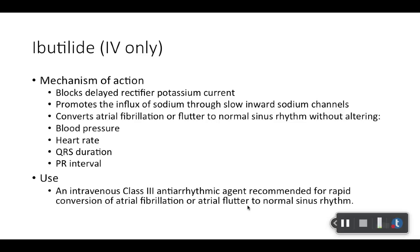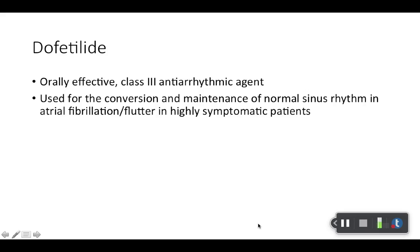Ibutilide is another class 3. Take-home mechanism of action: blocks potassium. Go ahead and read through that and make sure you know the other things. As far as uses, it can be used for atrial fibrillation and atrial flutter — that's consistent with current guidelines. It also has some box warnings. It has a box warning for life-threatening arrhythmias — it can cause potentially fatal arrhythmias, so it should be used cautiously. There's also a box warning for appropriate treatment environment because this medication must be administered in a setting with continuous ECG monitoring and personnel trained to identify and treat acute ventricular arrhythmias — it has such a high risk of causing arrhythmias.